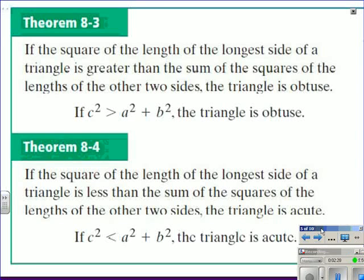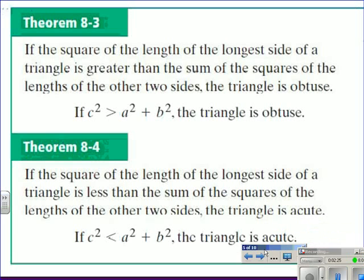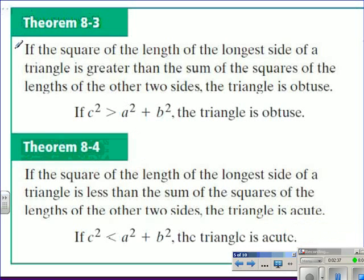Next, we have two inequalities to discuss, and they are related to the Pythagorean Theorem. In Theorem A3, it states if the square of the length of the longest side of a triangle is greater than the sum of the squares of the lengths of the other two sides, the triangle is obtuse. You can see the inequality there: if C squared is greater than A squared plus B squared, we can assume that the triangle is obtuse.